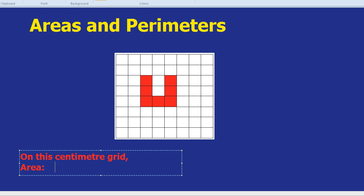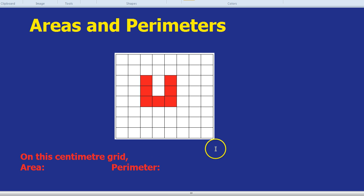Well, for area, what all we need to do is count up the number of boxes. So for this shape, the number of boxes would be 1, 2, 3, 4, 5, 6, 7.